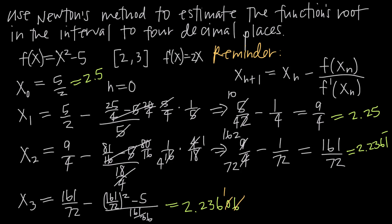So we can say that the root of this function — the point at which it crosses the x-axis — on the interval 2 to 3, is approximately x = 2.2361. Because we got the digits 2, 3, 6, 1 two approximations in a row, we're stable to 4 decimal places, which is what we were asked for. That's how you use Newton's method to estimate a function's root.